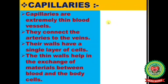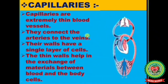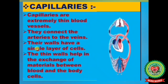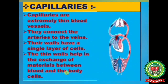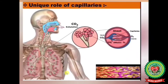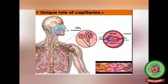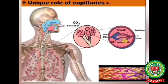Capillaries are extremely thin blood vessels that connect the arteries to the veins. Their walls have a single layer of cells, and these thin walls help in the exchange of materials between blood and the body cells. As blood flows along the capillary, oxygen and other useful substances diffuse out to the surrounding cells, and waste materials like carbon dioxide diffuse into the blood, making it deoxygenated. In this way, capillaries keep our tissues in a healthy state, and every organ contains thousands of capillaries.